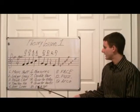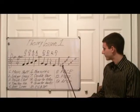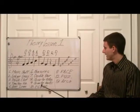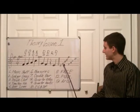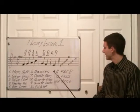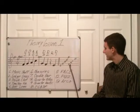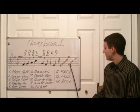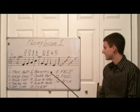E, G, B, D, F represents the lines on the music staff — Every Good Boy Deserves Fudge. That's a good way to remember it: the first line is E, the second is G, then B, D, and F. That's an easy way to remember that.